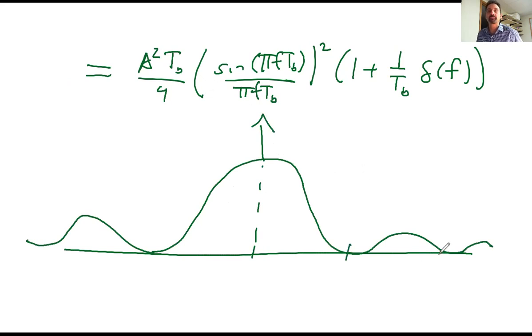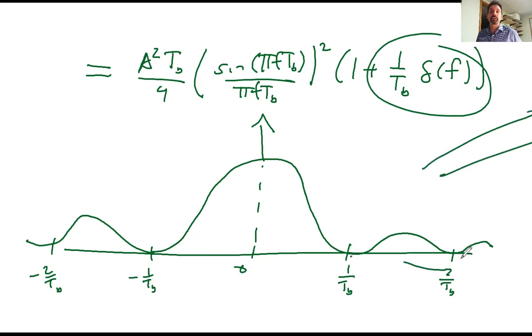So what you end up getting is something that looks like this. Sinc squared, and then you have a delta at the top. So that's what it should look like. And see this is where that's one over TB, two over TB, zero, minus one over TB, minus two over TB. And so that delta there, that's this guy. So that's what your PSD is going to look like.